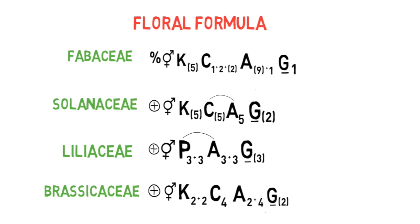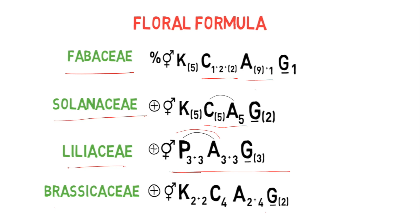Let's review all four families once more. Fabaceae: recognized by papilionaceous flower, pentamerous, and diadelphous stamens. Solanaceae: pentamerous and epipetalous stamens. Liliaceae: perianth present, epiphyllous condition, and trimerous. Brassicaceae: tetramerous and tetradynamous stamens.